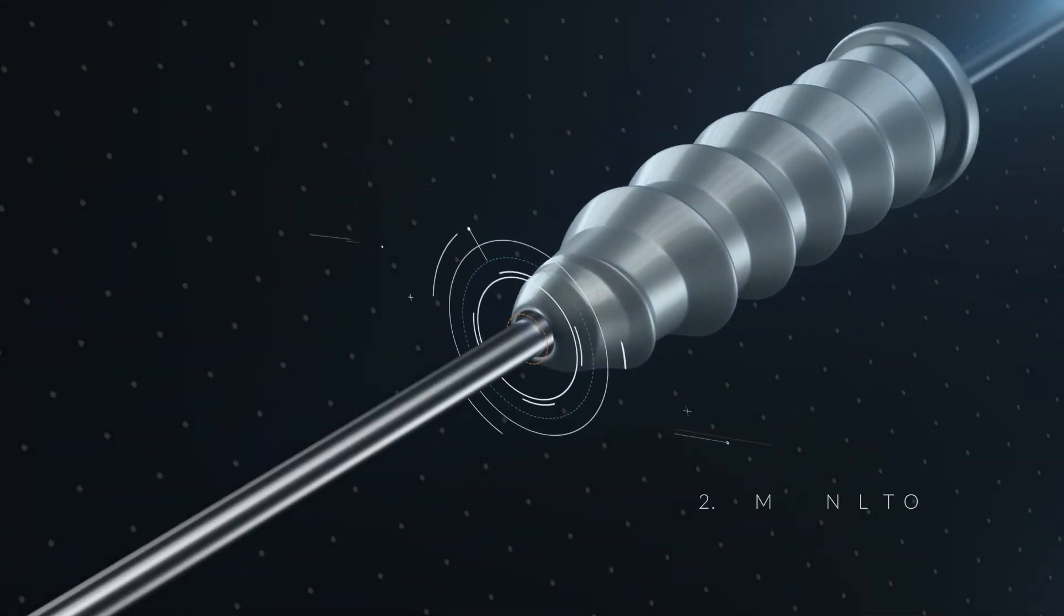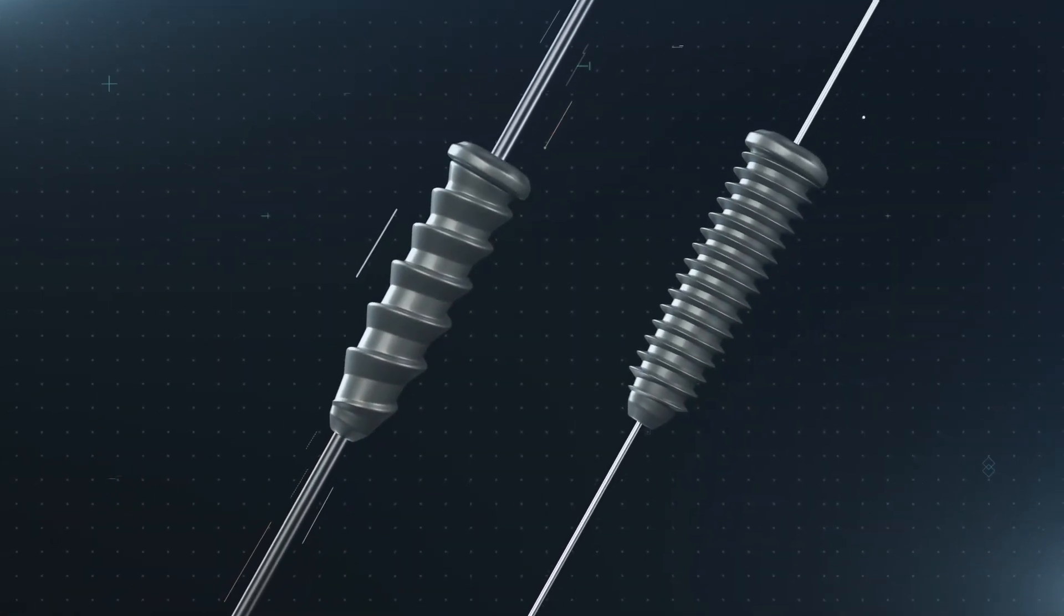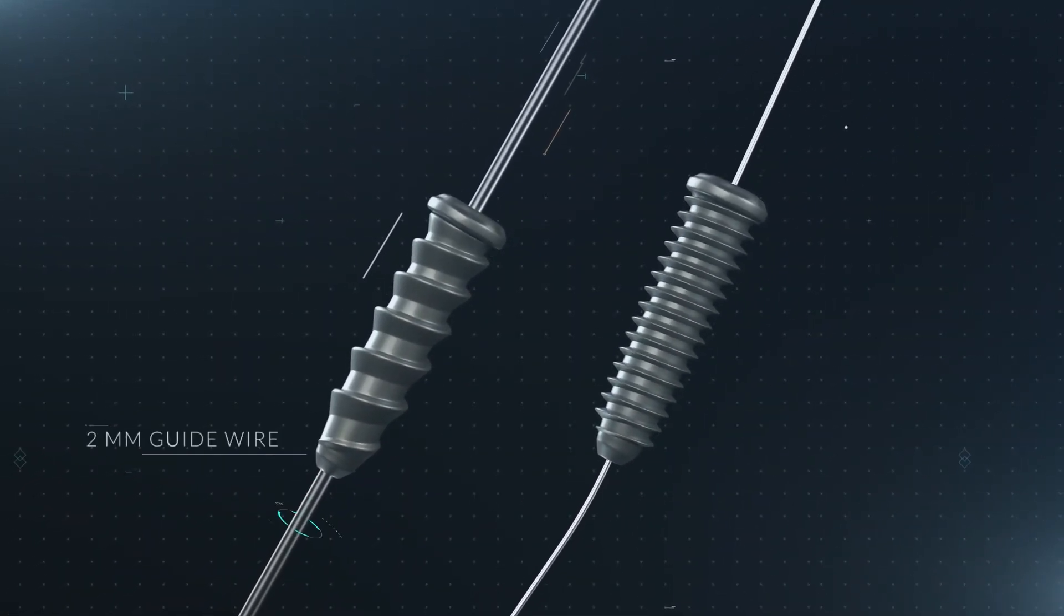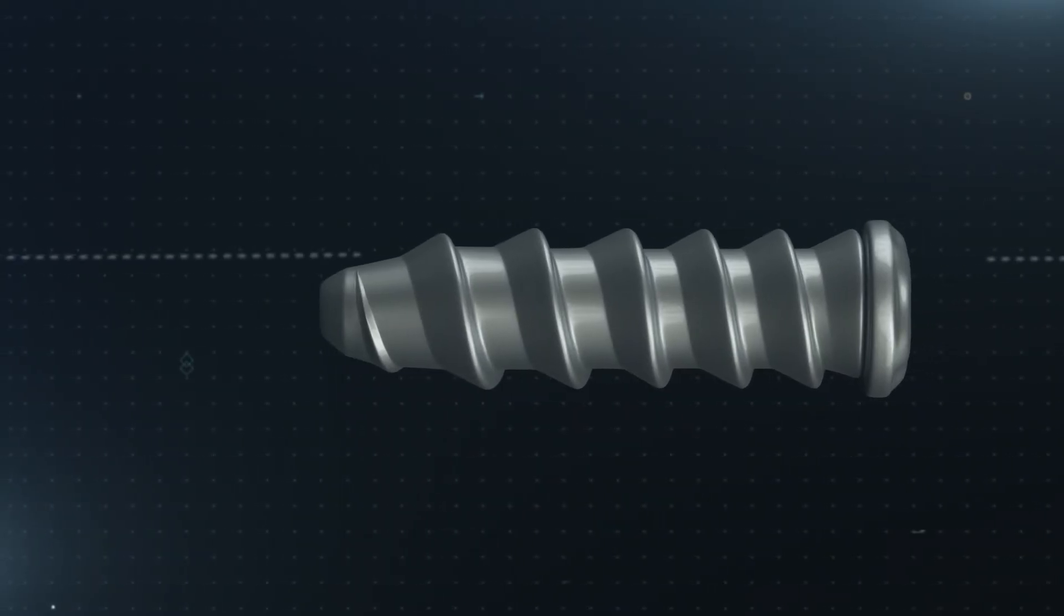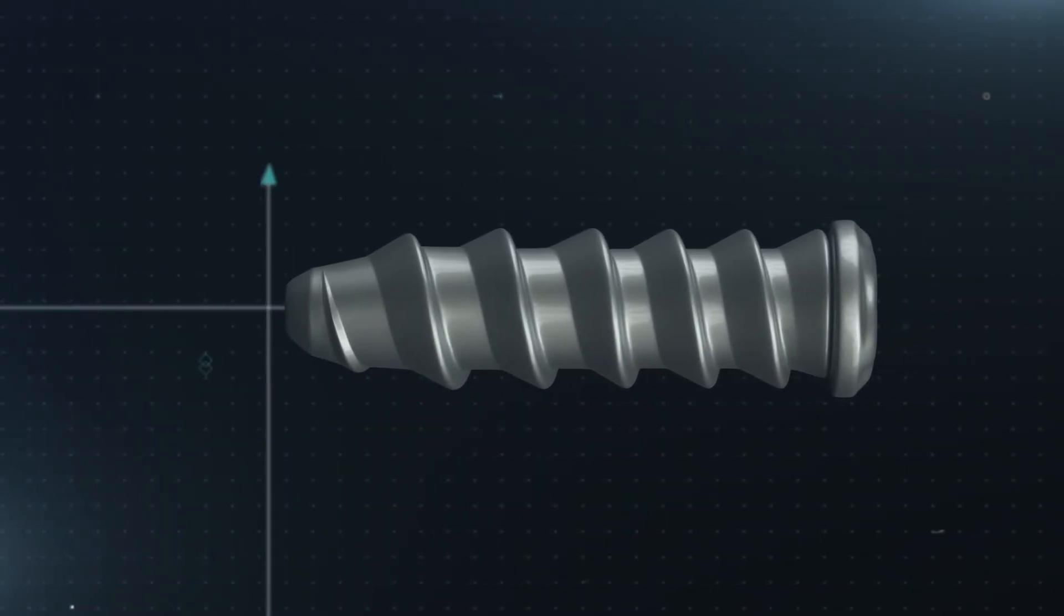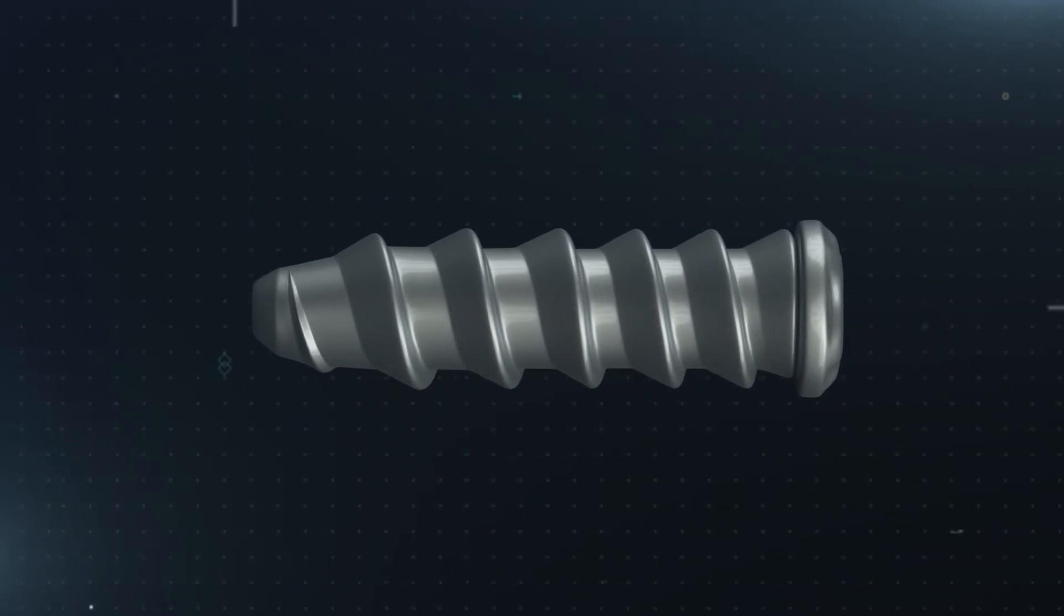The screw features a wider 2.5 mm cannulation, so a rigid guide wire can be used. And with the addition of a tapered tip, smooth entry and correct angulation is achieved with minimal effort.